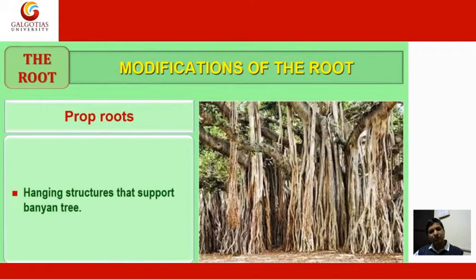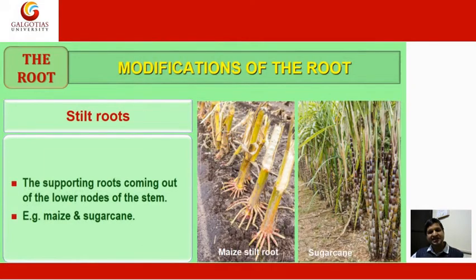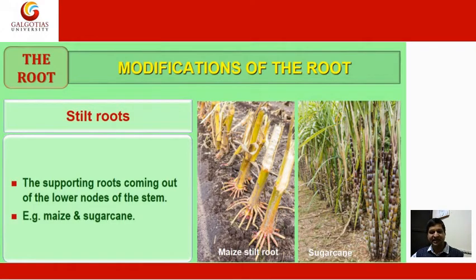Prop roots are hanging structures that support the banyan tree. Stilt roots are supporting roots that come out of the lower nodes of the stem — examples include maize and sugar cane.